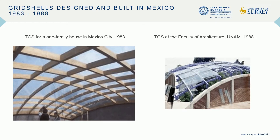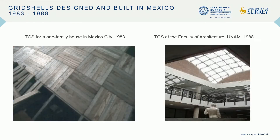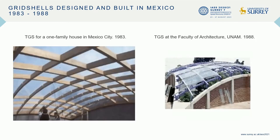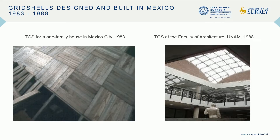On the left side, we can see a translation grid shell for a one-family house in Mexico City, constructed in 1983. It covers an area of 36 square meters and was built with straight timber rods covered with glass and timber planar plates. On the right side, we can see the translation grid shell at the Faculty of Architecture of the University of Mexico, built in 1988. It has a covered area of 285 square meters.